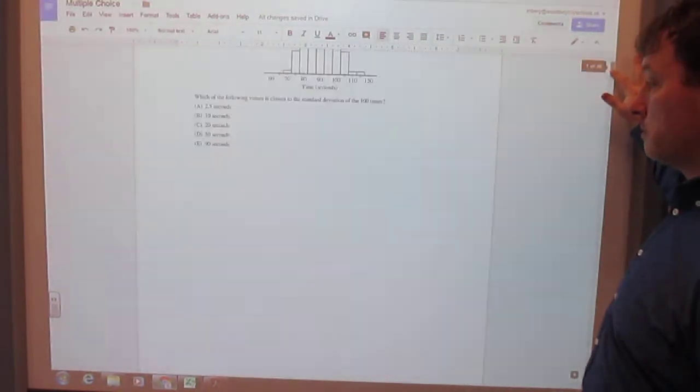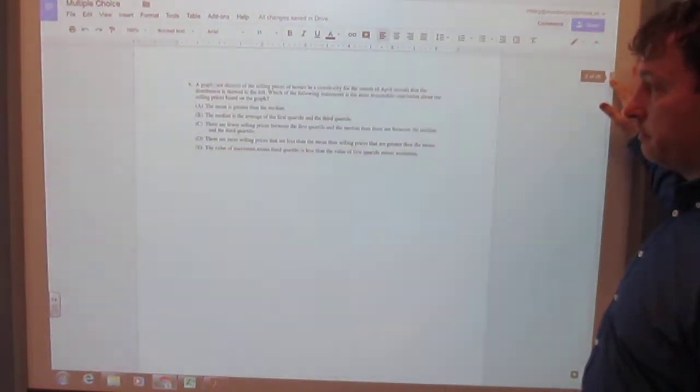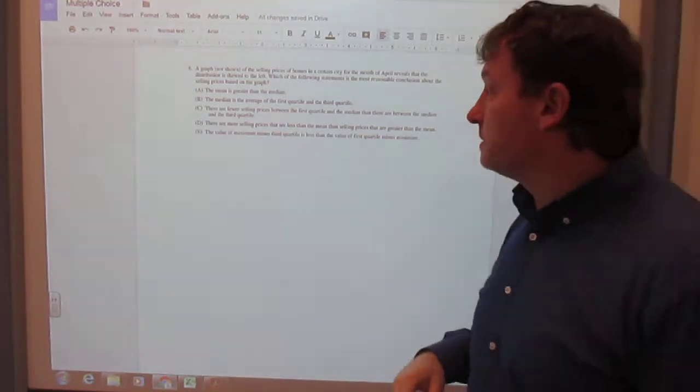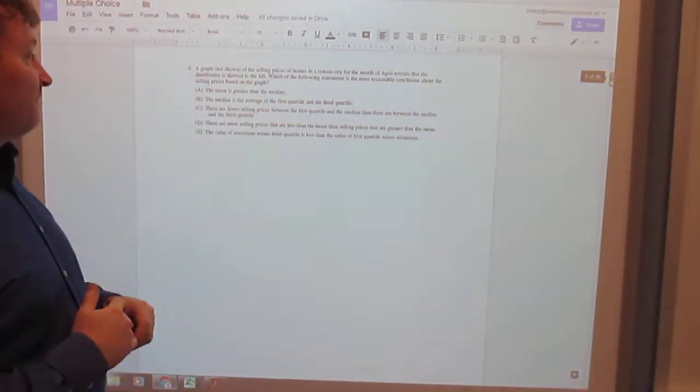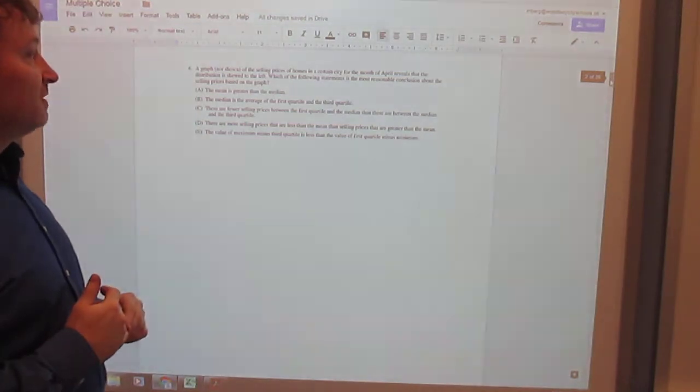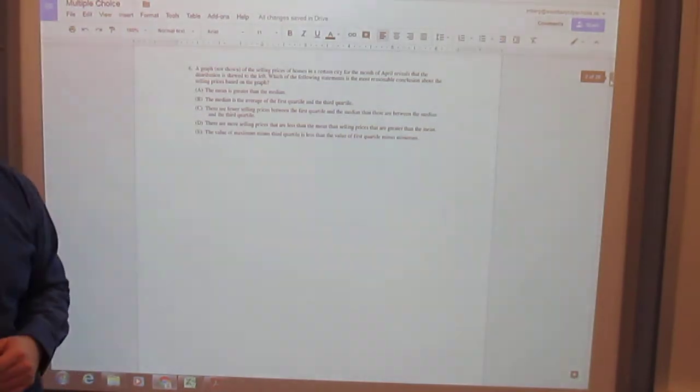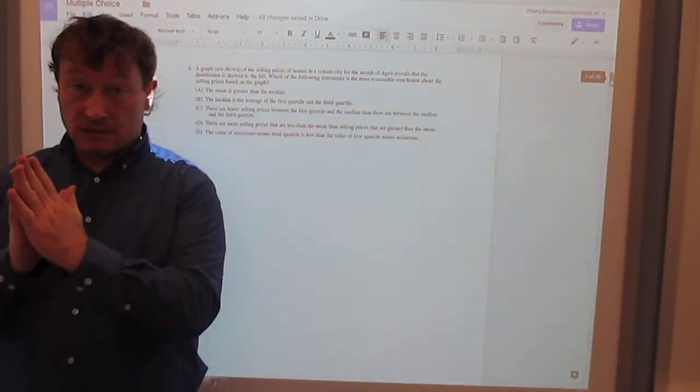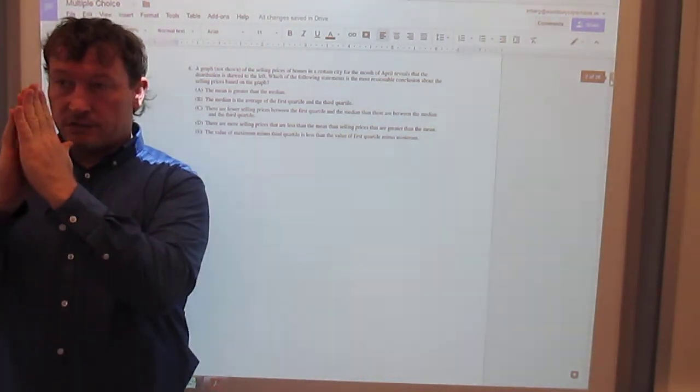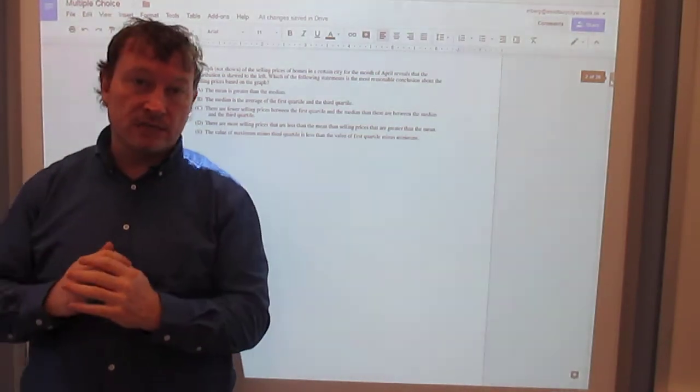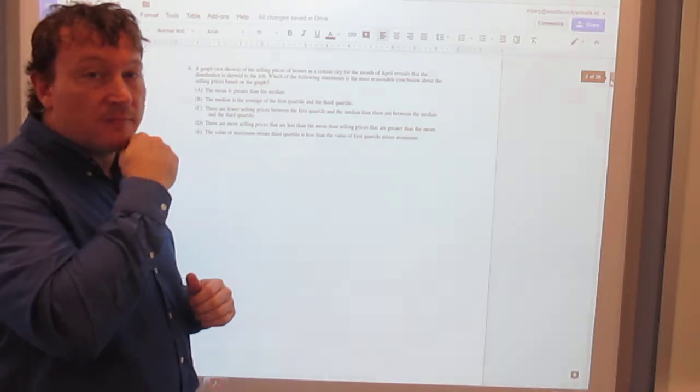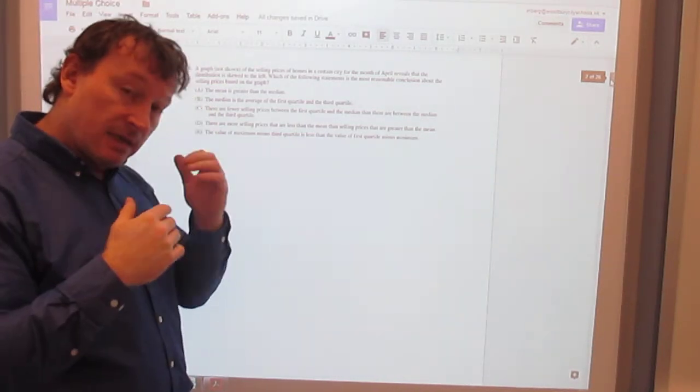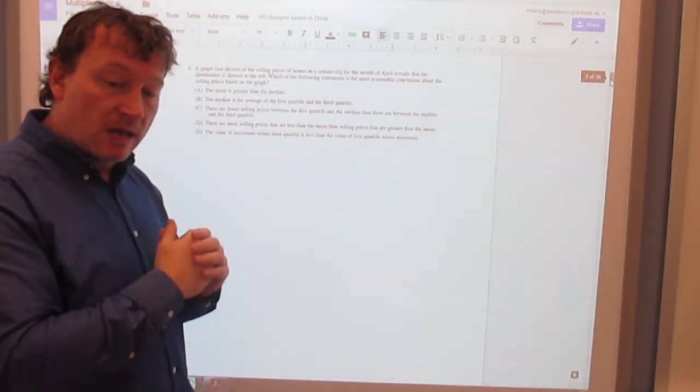A graph is not shown. It's skewed to the left. Which of the following is the most reasonable? This may be one of those where skewed to the left, figure out my skewness. As I skew to the left, what happens to the mean versus the median? There's a document you can look up that's in the drive that talks about what happens.